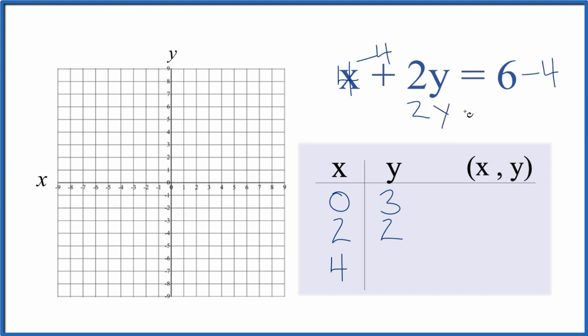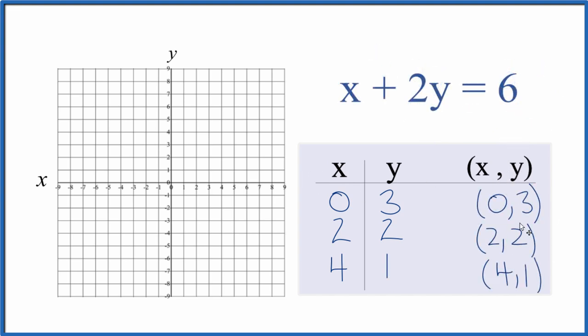That gives us 2y equals 2. Divide by 2. Y equals 2 over 2. That's 1. So these are the points that we'll graph for the equation x plus 2y equals 6.